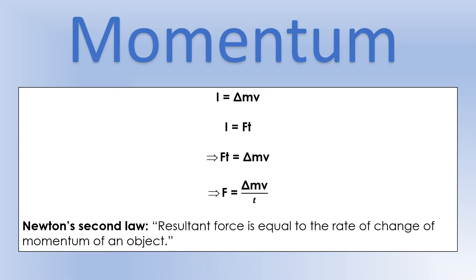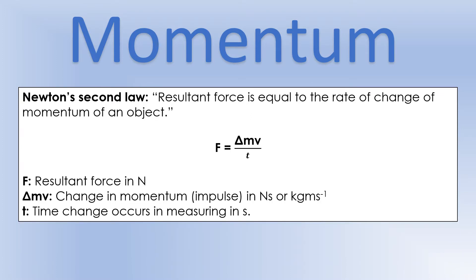Putting those together: impulse is change in momentum, and impulse equals force times time. We can rearrange that to get an equation in terms of force: force equals change in momentum divided by the time the change occurs. This is where Newton's second law fits in. You might know Newton's second law as F equals MA, but that's not the actual definition — Newton's second law says resultant force equals the rate of change in momentum, which in many cases gives us F equals MA.